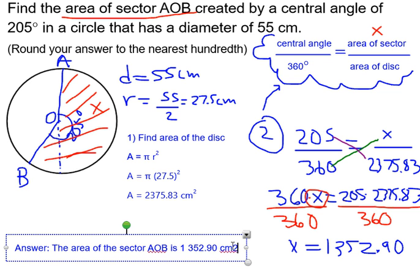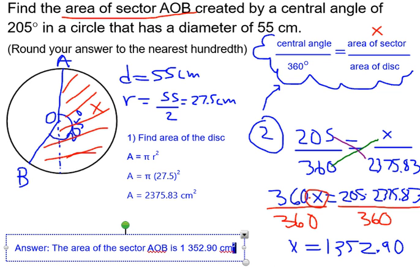Don't forget to write your unit. The area of sector AOB is 1352.90 centimeters squared.